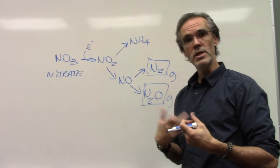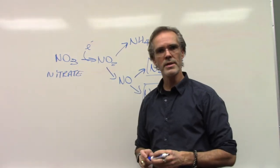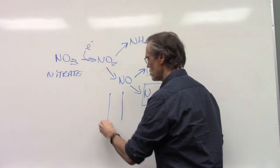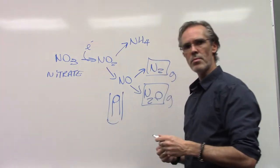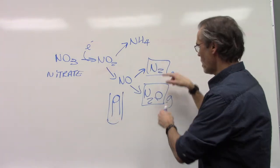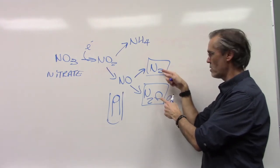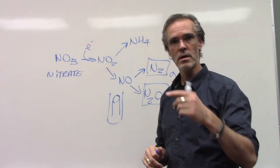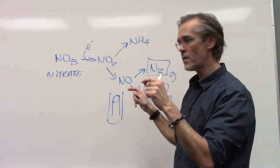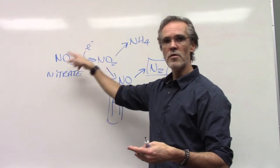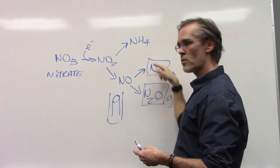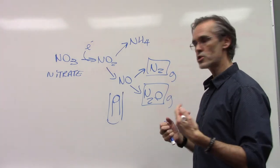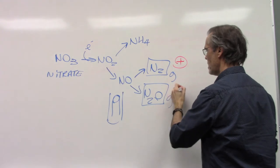Say you have your Durham tube and want to know: does my bacteria reduce nitrate or not? You grow your bacteria in a Durham tube with an inverted inner tube. If you do have a bubble, you know gas has been produced. Nitrogen and/or nitrous oxide are in gas form, so if you see gas formation in your Durham tube — a gas bubble — you know for sure your bacteria converted nitrate through this pathway.